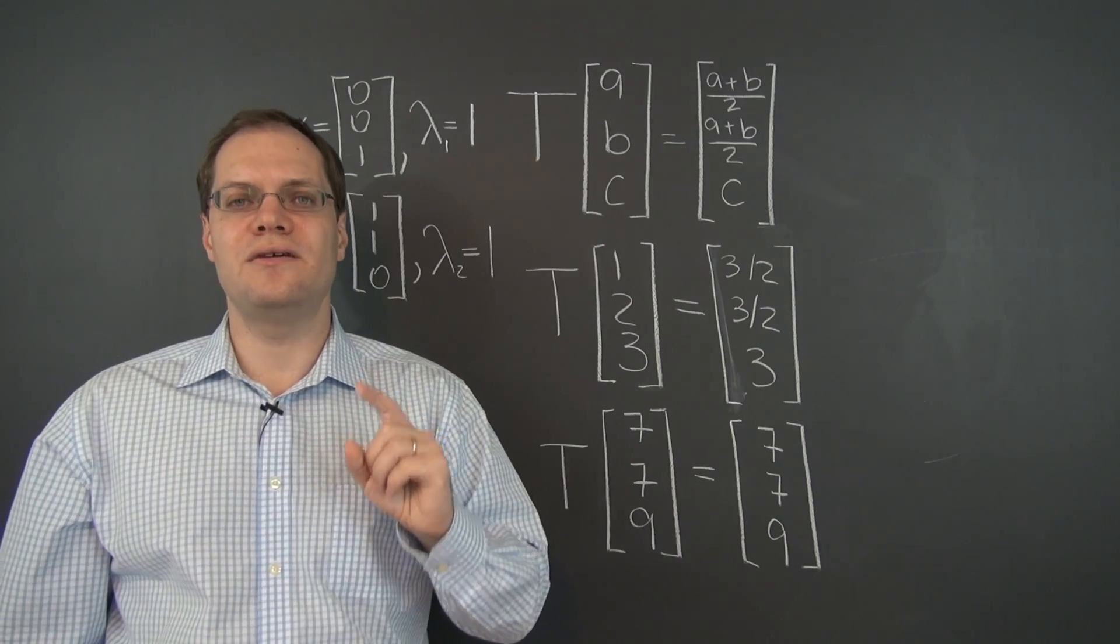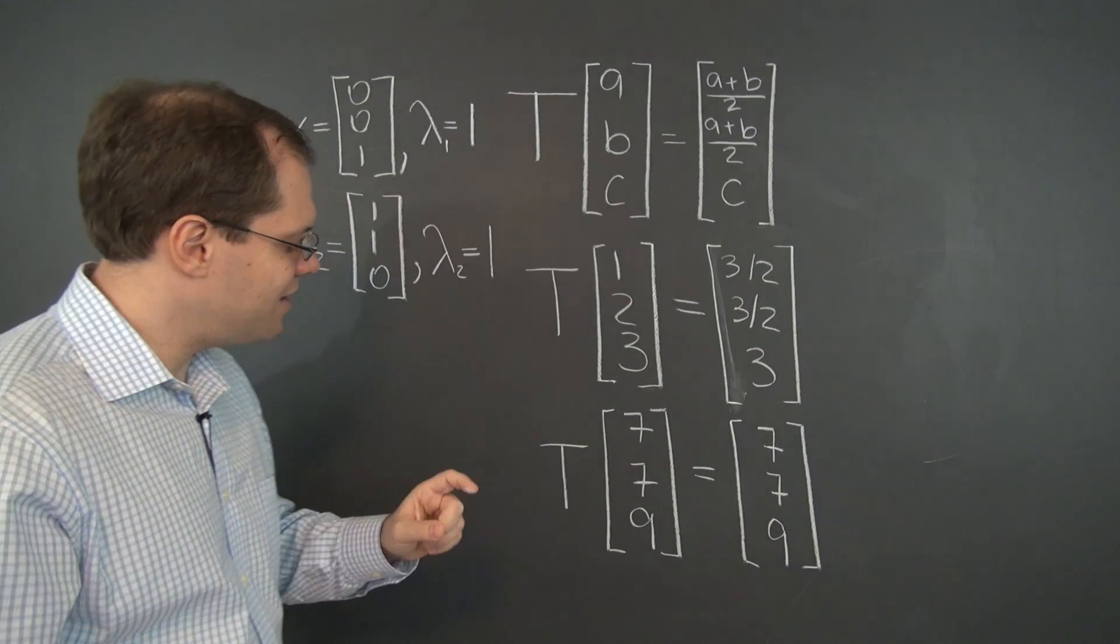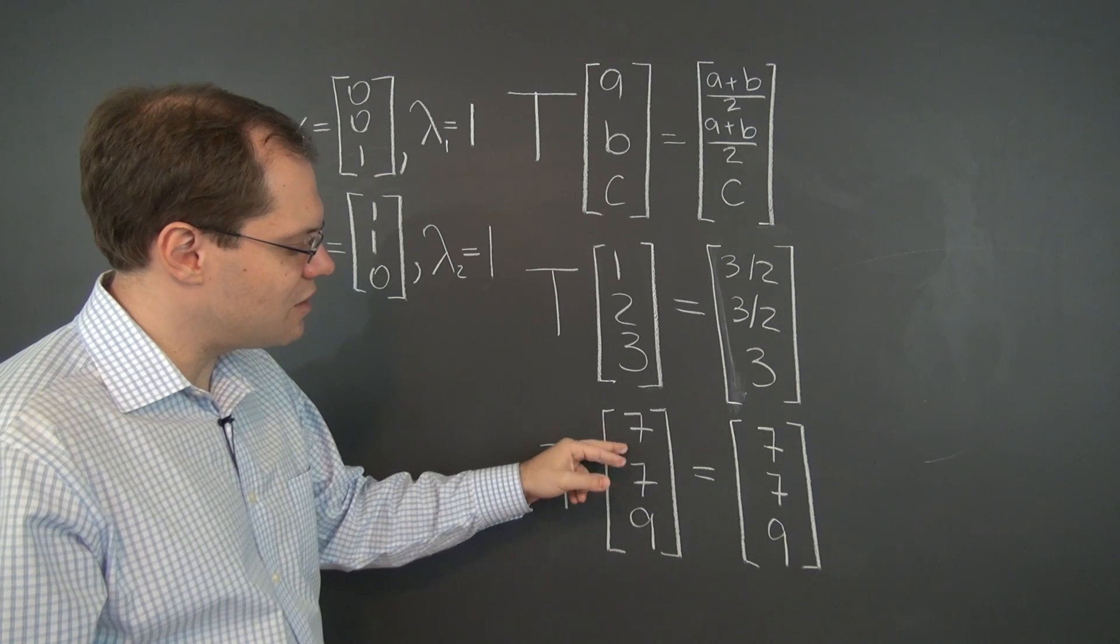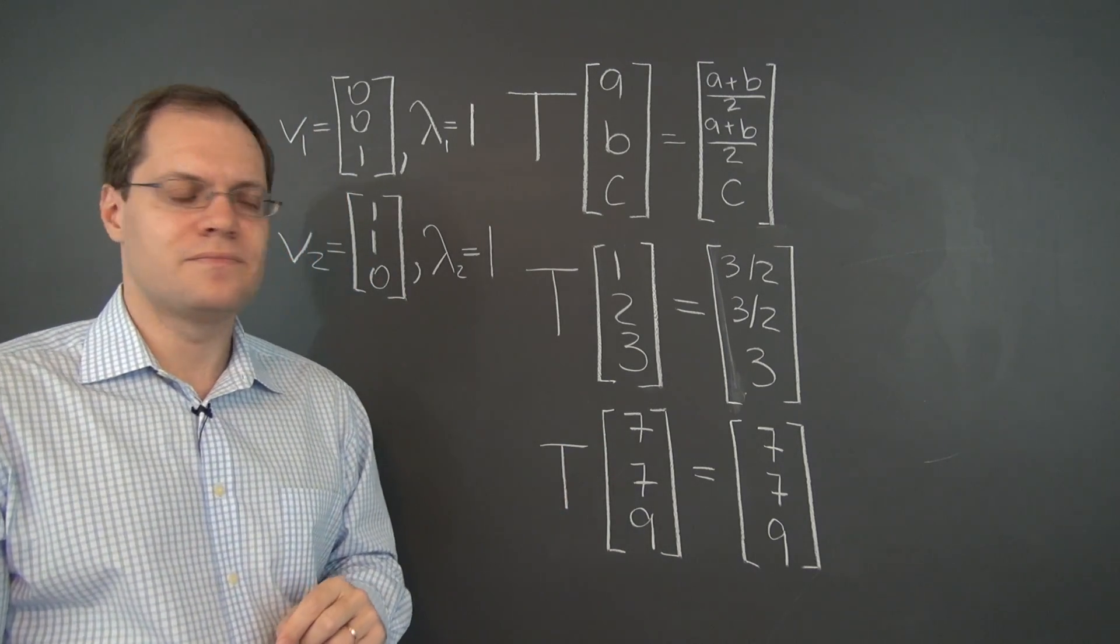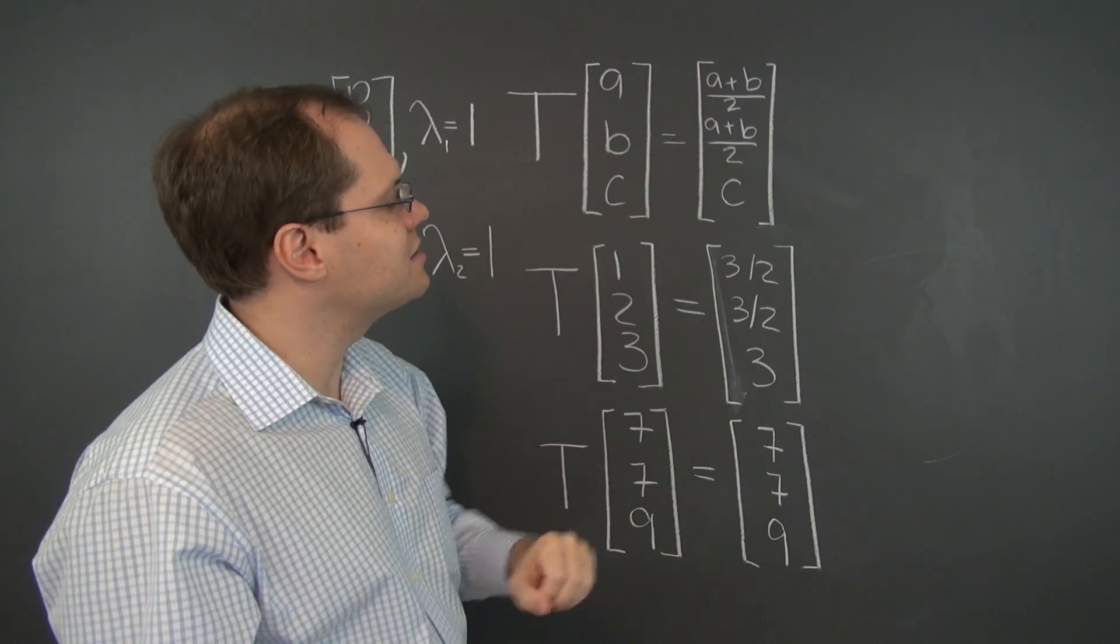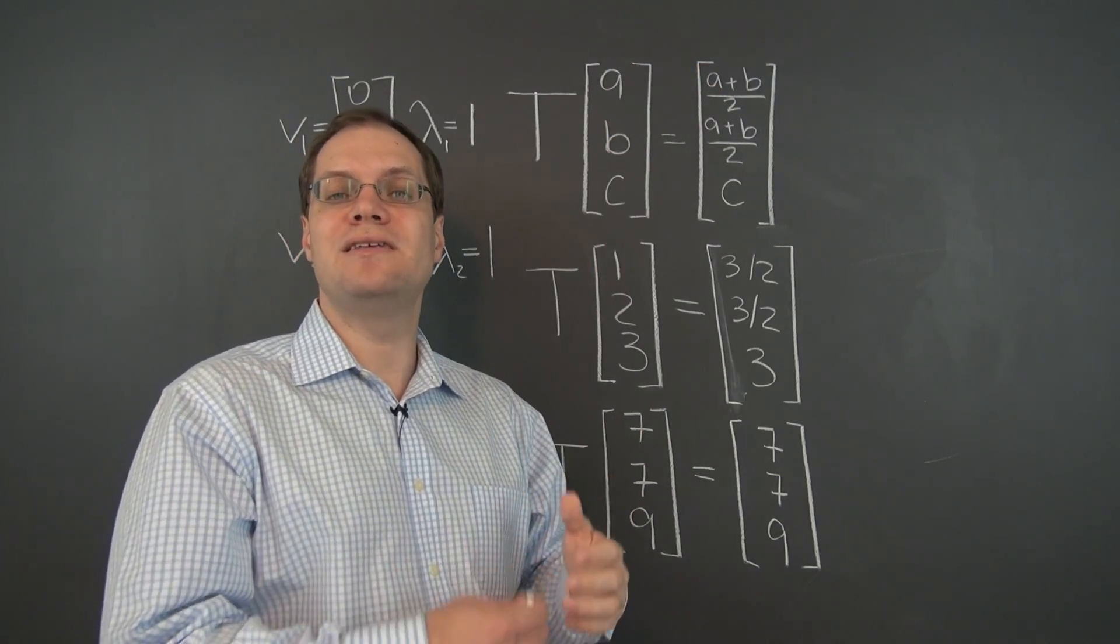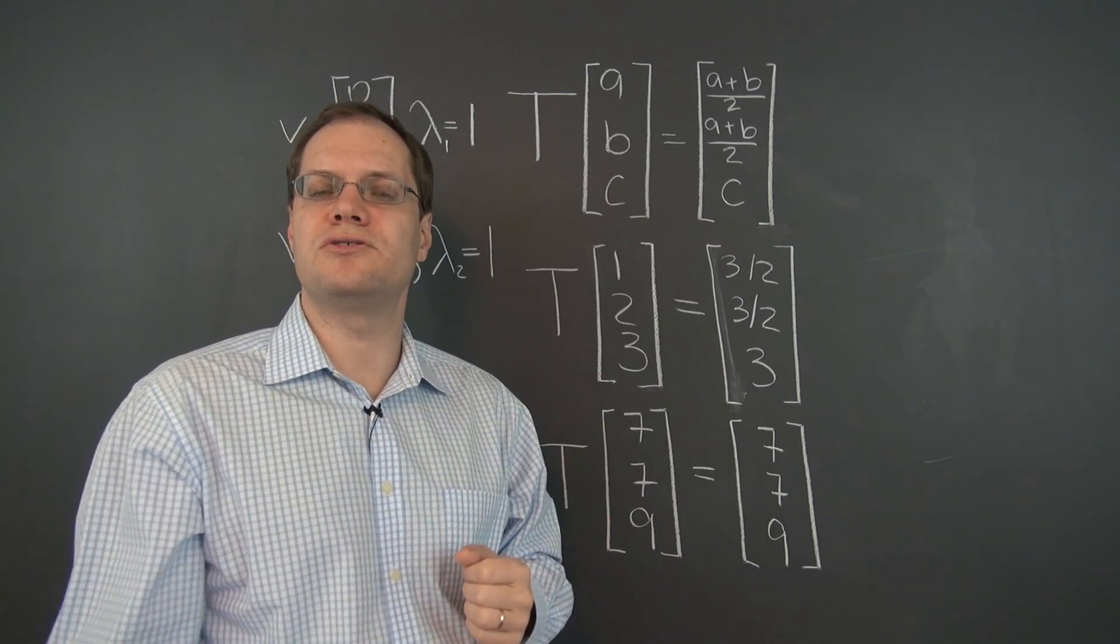Now, can you see one more? I think you can. Again, what if these two numbers are opposites of each other? What if it had been 7 minus 7? And the average in both cases will be 0. So that vector will end up being 0, 0, whatever the third entry was.